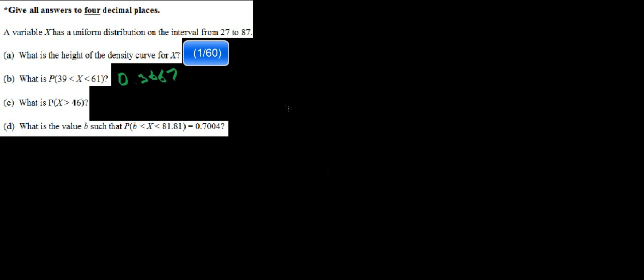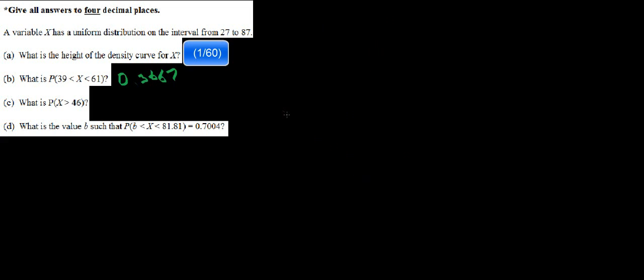So this will be my answer over here. The next question is, what is the probability of getting something greater than 46? So we're trying to find the proportion between 46 and the limit of the uniform distribution, which right here is going to be 87. Because, if you recall, it is only a uniform distribution from 27 to 87.